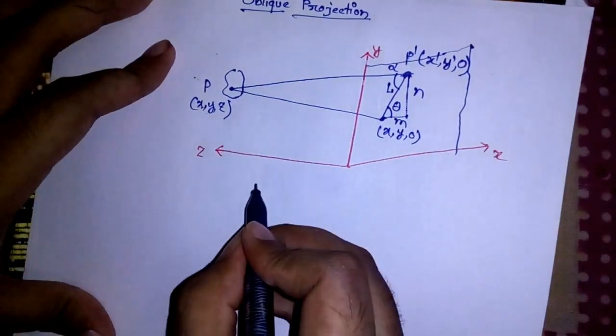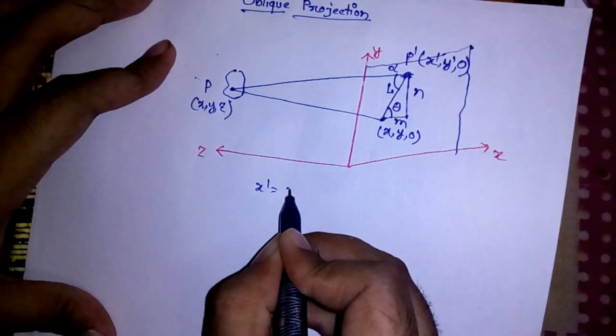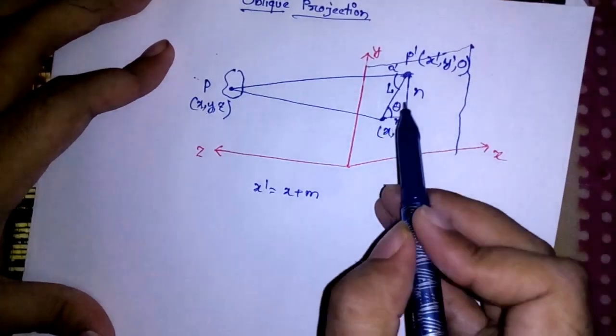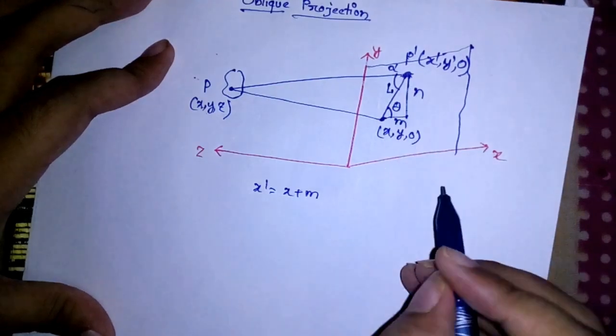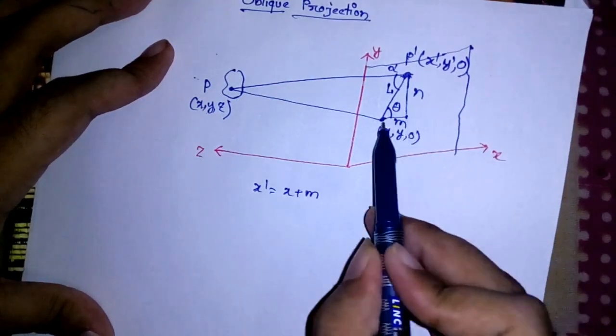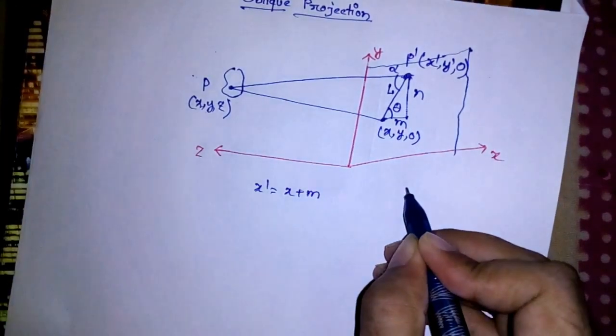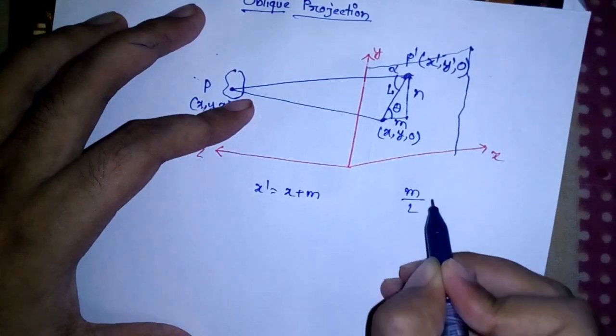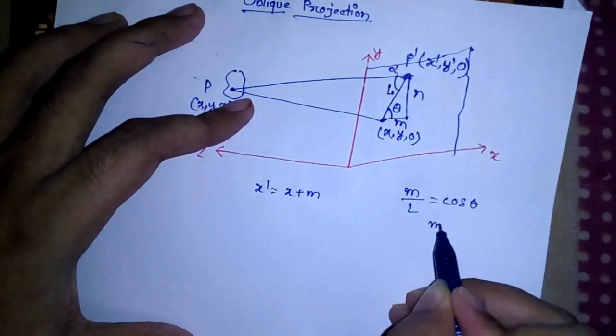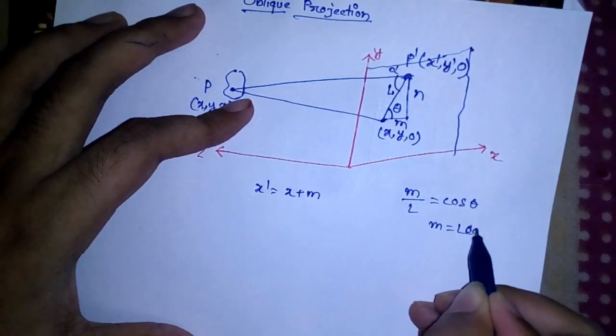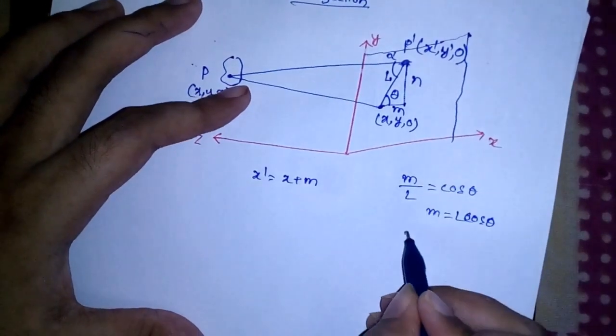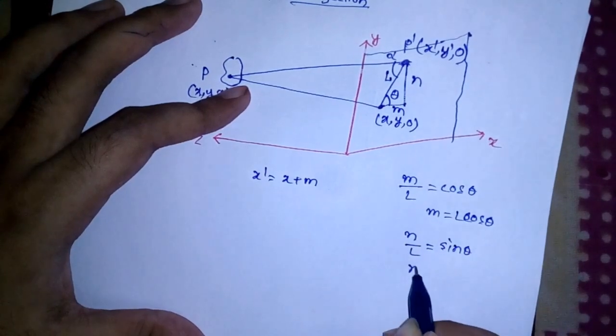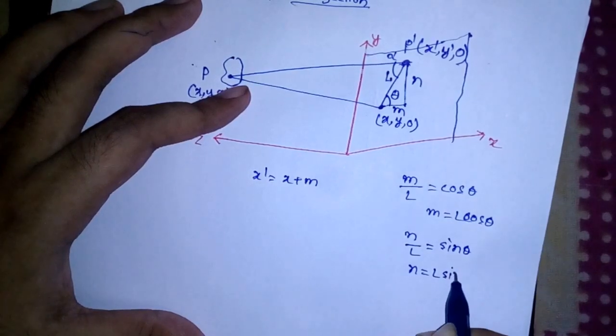So X dash is clearly X plus M. What is the value of M? If I look at this triangle, this M is actually perpendicular, so if I write M by L, that will be cos theta. So M will be L cos theta. Similarly, if I see this N, N by L will be sin theta, so N will be L sin theta.